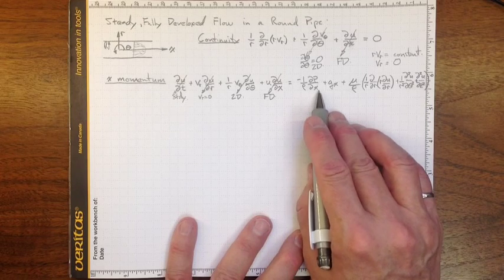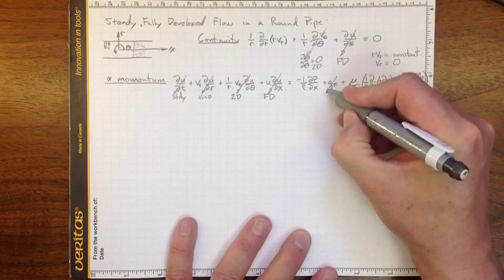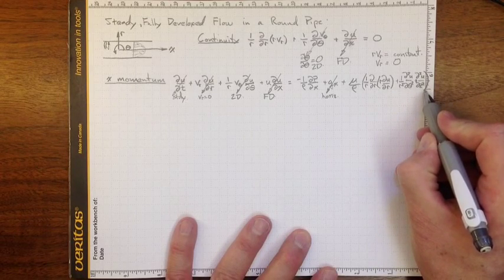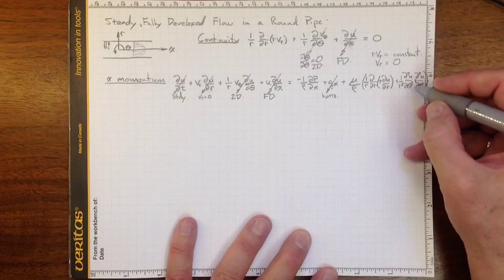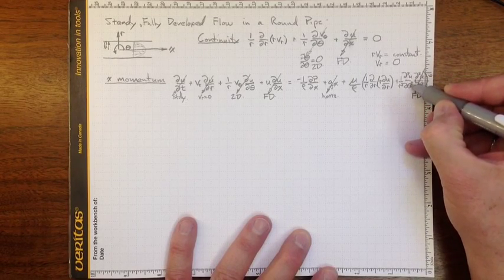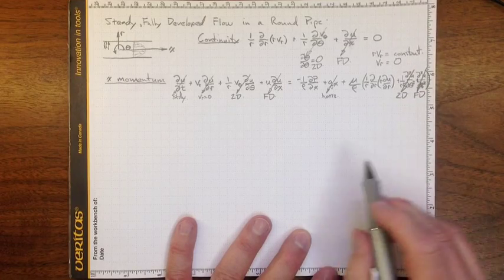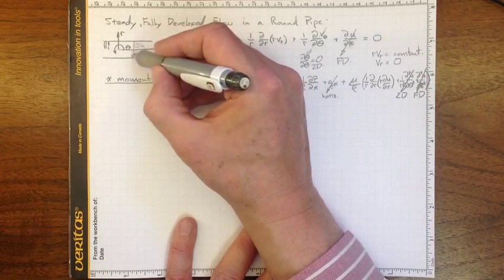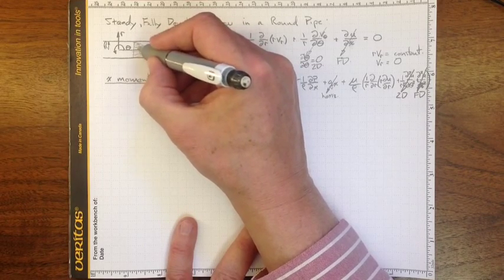We will have a pressure gradient — we don't know what it is yet, but it's there. Gravity cancels out since the pipe is horizontal. Looking at the viscous terms: d²u/dx² goes to zero because the flow is fully developed, and d²u/d(theta)² goes to zero because it's two-dimensional. So all we're left with is the dp/dx term and the viscous term for shear associated with changes in velocity in the r direction.